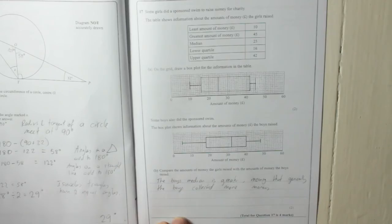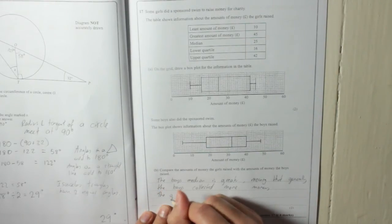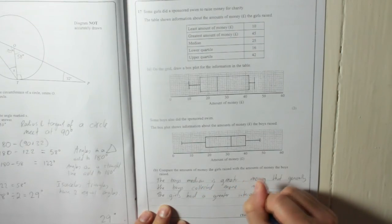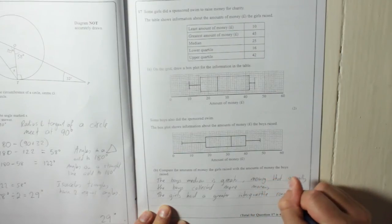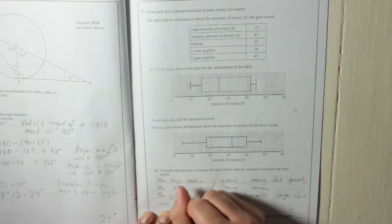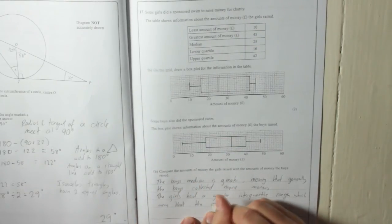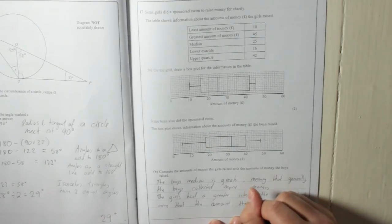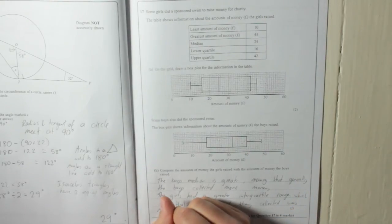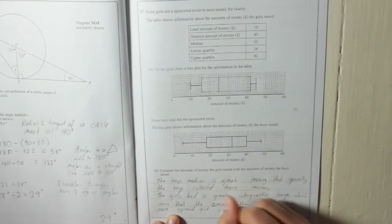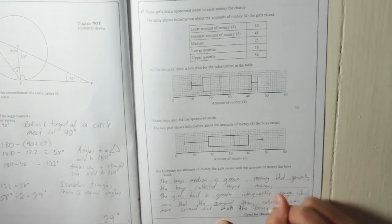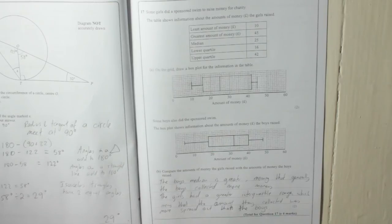In this case, the girls' interquartile range is bigger. So, you'll say, the girls' had a greater interquartile range, which means that the amount they collected was more spread out than the boys. Don't worry about being all technical here, just say something that roughly means what you want to say. It's not an English exam.